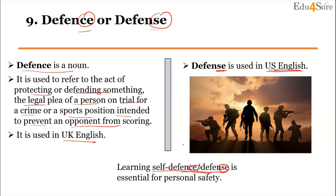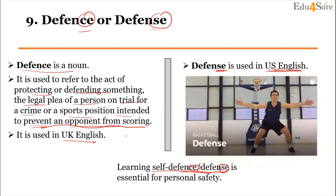Similarly, for the meaning of preventing an opponent from scoring, you can take a basketball or football example. If you have a defense position, you can use either S-E or C-E — both spellings of 'defense' apply.